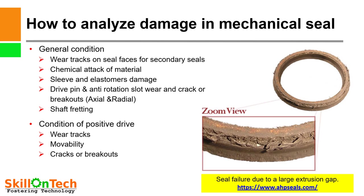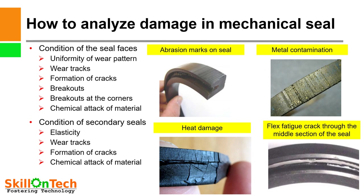General conditions to note include: wear tracks on seal faces, secondary seals and elastomers, chemical attack of material, sleeve and elastomer damage, drive pin and anti-rotation slot wear, cracks or breakouts. If there is any axial or radial breakout it should be noted. Shaft fretting, condition of positive drives, wear tracks on seal faces, and movability — whether your seal motion is restricted — should all be recorded. Any cracks or breakouts visible on the rotating or stationary components of the mechanical seal faces must be noted.